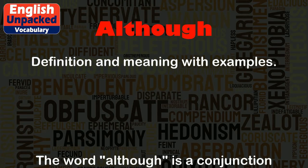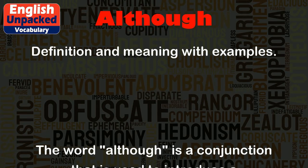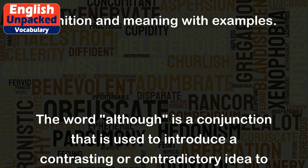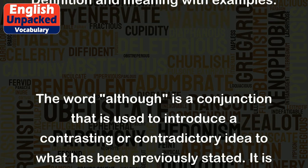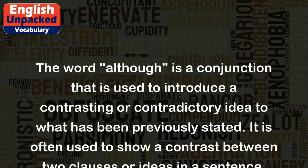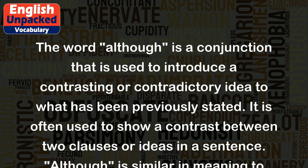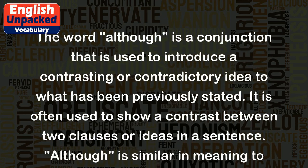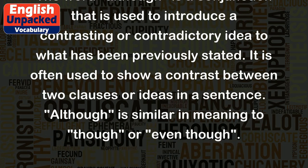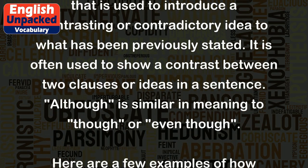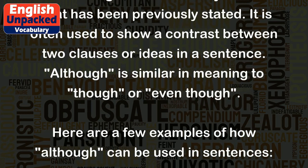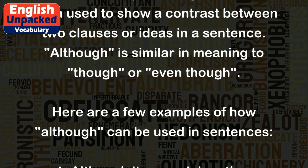Although. The word 'although' is a conjunction that is used to introduce a contrasting or contradictory idea to what has been previously stated. It is often used to show a contrast between two clauses or ideas in a sentence. 'Although' is similar in meaning to 'though' or 'even though'.